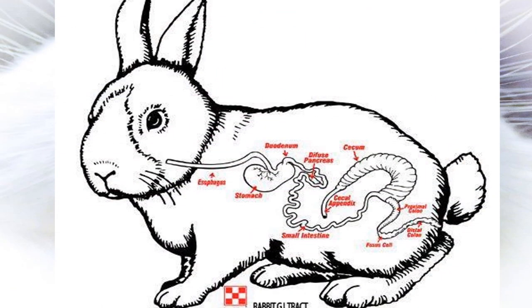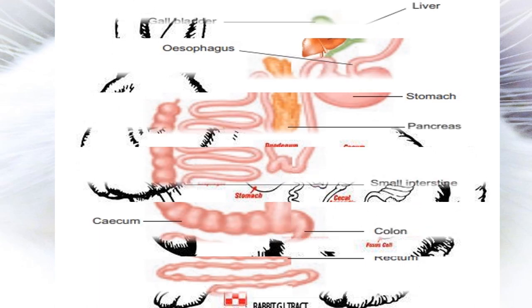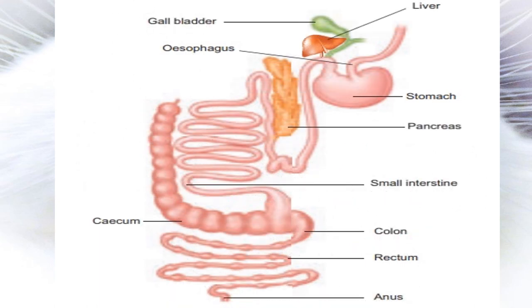The buccal cavity leads to the esophagus through the pharynx. The pharynx connects the buccal cavity and esophagus. The esophagus opens into the stomach, which is followed by the small intestine. The cecum is a small thin-walled sac present at the juncture of the small intestine and large intestine.